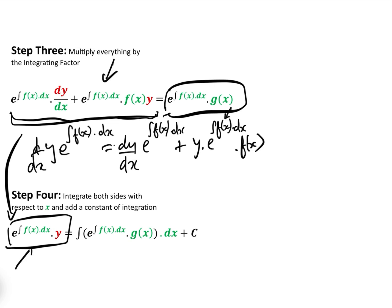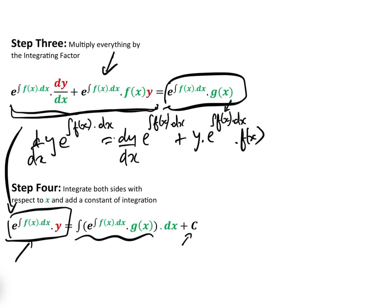Now, this right-hand side here can be anything, and you just have to use your integrating skills to integrate that. But anyway, in step four, once we've done that, this bit is sorted, this bit could be anything, and this bit is our constant of integration.